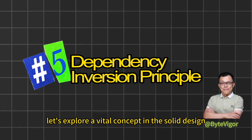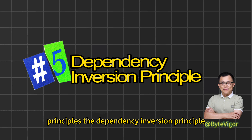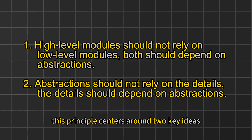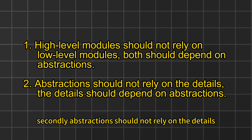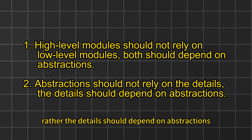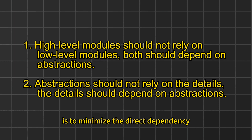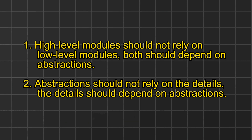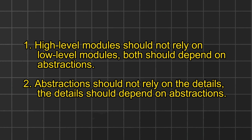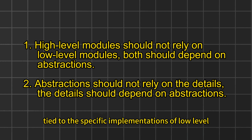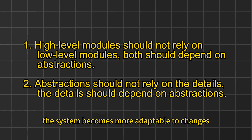Finally, let's explore the fifth SOLID design principle, the Dependency Inversion Principle. This principle centers around two key ideas. First, high-level modules should not rely on low-level modules — instead, both should depend on abstractions. Second, abstractions should not rely on details; rather, the details should depend on abstractions. The primary goal is to minimize the direct dependency between high-level and low-level classes by introducing an abstraction layer, greatly enhancing the code's maintainability and the system's flexibility.